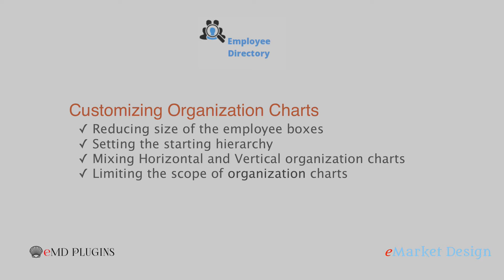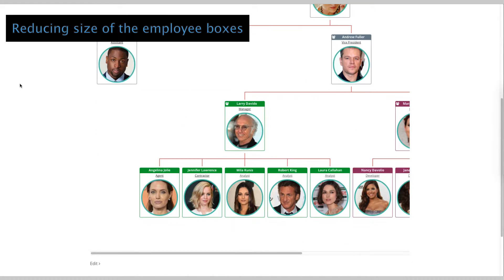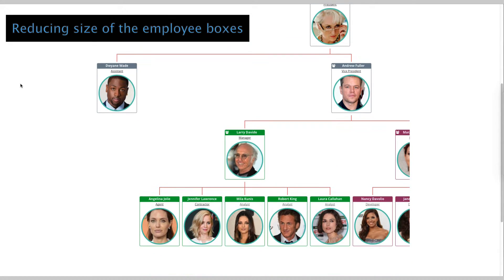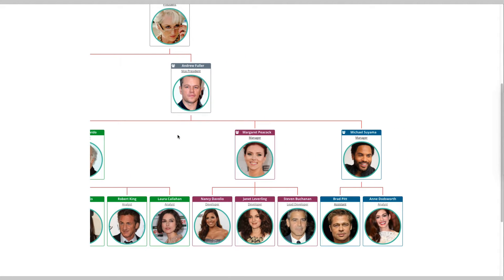Customization of organization charts can be done in multiple ways. You may need to use one or a combination of methods to make your perfect organization chart. You might reduce the size of the employee boxes if you have a targeted device size. To do this, modify the CSS rule provided based on your need and add it to the custom CSS field under the Tools tab of the plugin settings.